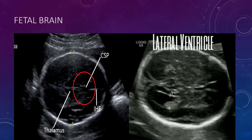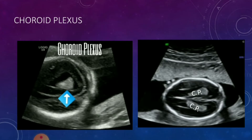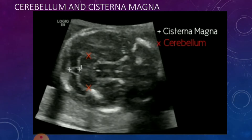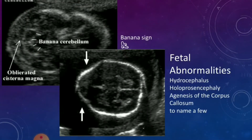Next, you want to look at the intracranial anatomy or the brain tissue. You want to look at the cavum septum pellucidum, the lateral ventricles — measured from inner to inner — the choroid plexus, corpus callosum, cerebellum, and cisterna magna. Looking at the intracranial anatomy, you can rule out things like hydrocephalus, agenesis of the corpus callosum, holoprosencephaly, cerebellar issues, Dandy-Walker malformations. You can see the banana sign, which along with the lemon sign can be indicative of spina bifida. Also schizencephaly, among many other things.